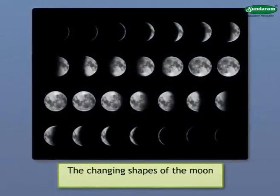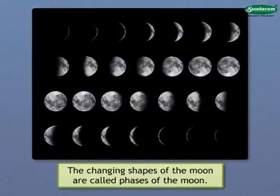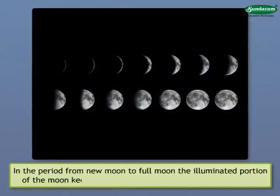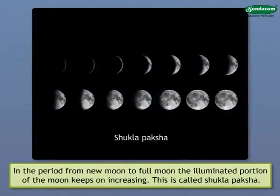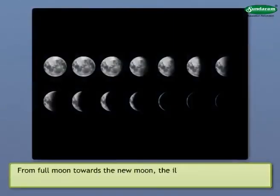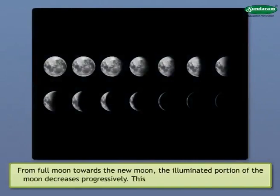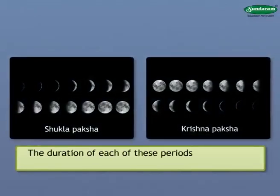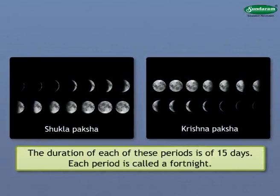The changing shapes of the Moon are called Phases of the Moon. In the period from New Moon to Full Moon, the illuminated portion of the Moon keeps on increasing. This is called Shukla Paksh. From Full Moon towards the New Moon, the illuminated portion of the Moon decreases progressively. This period is called Krishnapaksh. The duration of each of these periods is of 15 days. Each period is called a fortnight.